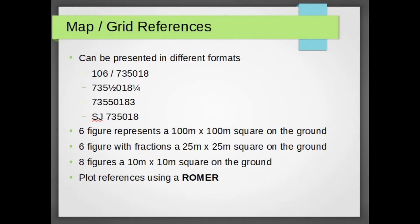Map references can be presented in different formats depending upon the accuracy required, but the principles for plotting them remain the same. Using a Roma really helps with plotting speed and accuracy, very important elements for rallying.